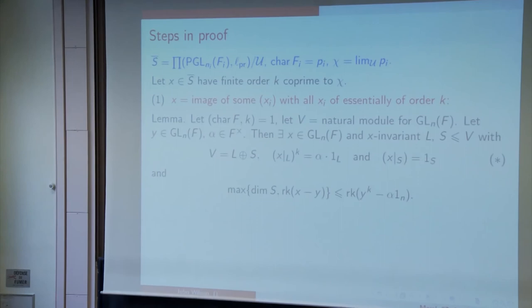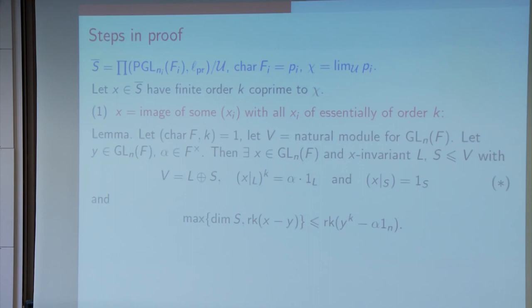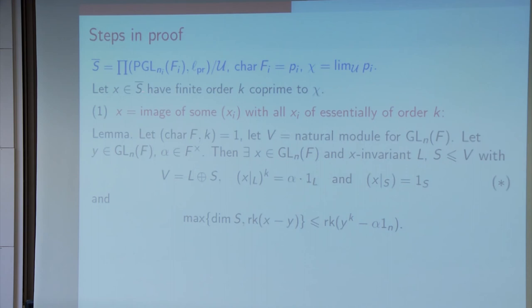Do I want to talk about steps in the proof? Maybe I'll start off talking about steps in the proof, but we're not going to follow this through very far, because I have something else to say. So, hypotheses as on the previous slide, and we're going to let X have finite order K co-prime to χ. We want to show, so what is this element X̄ in S̄? S̄ is a metric ultraproduct. Its elements are equivalence classes of sequences. And what we need to know is that this X here is the image of some sequence. That is, the sequence can be nicely chosen from its equivalence class with all Xi essentially of order K. And to do this, one proves a lemma like this.